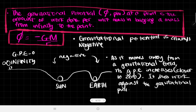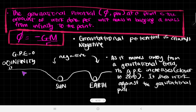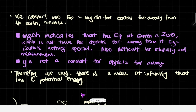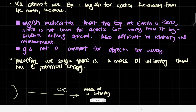We know that the work done is the energy transferred to something. So as we can see, if this little cube is a mass at infinity — so long a distance that we cannot actually draw it out — then this would have a gravitational potential energy of zero, as we've seen from this statement.